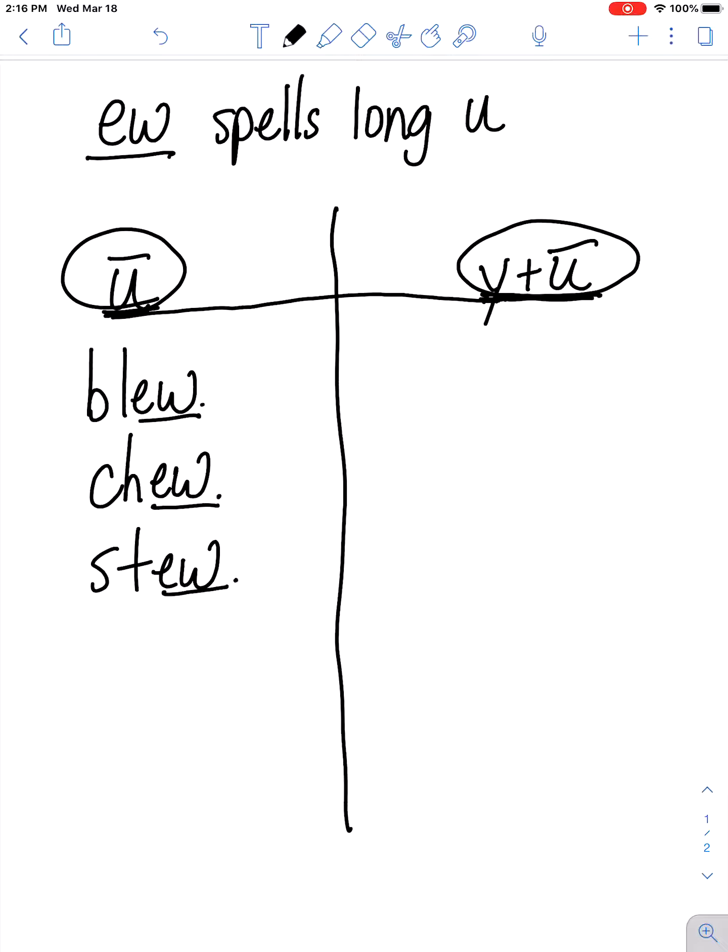But EW can also spell the sound you. For example, the word few. You can see the EW here says you. If it didn't, we would pronounce this word foo, which of course we don't. So we know that the EW is saying the glided long u sound: few.